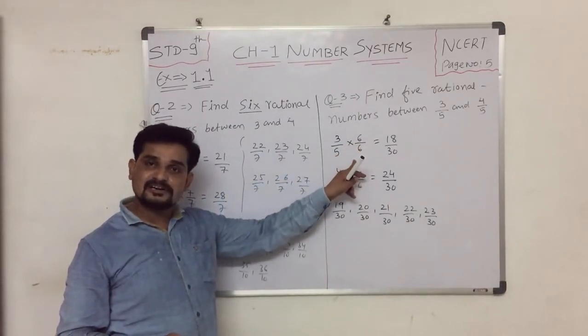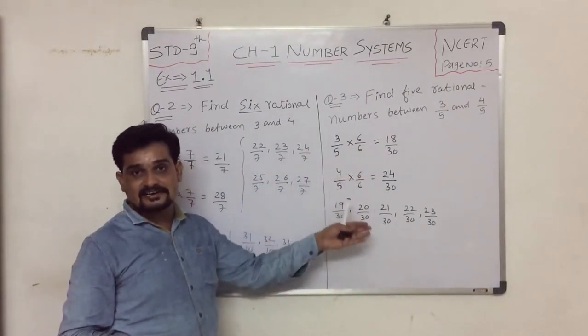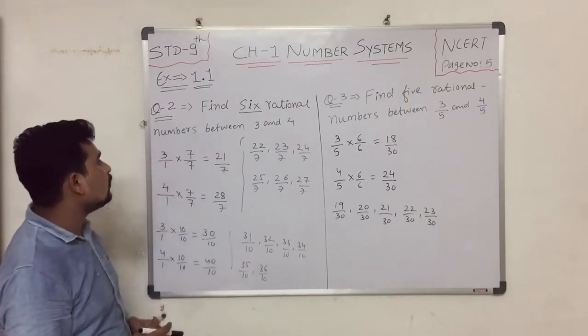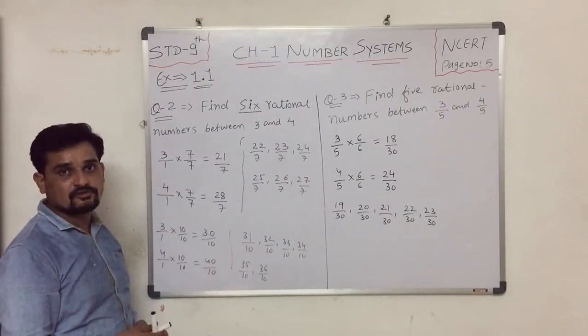If you multiply by 7 or 10 or any other number, you will get the rational numbers. I hope you understood the question. Thank you.